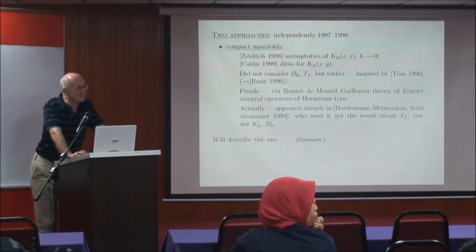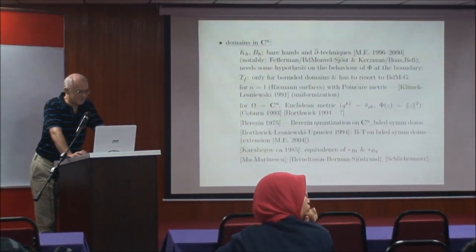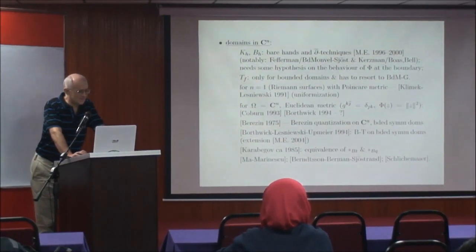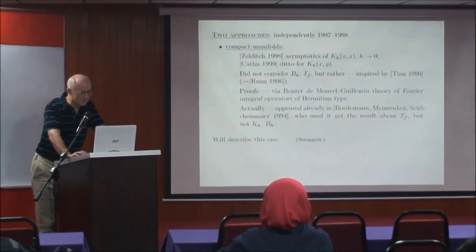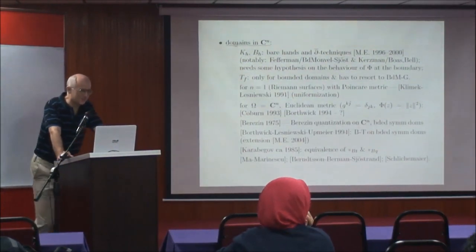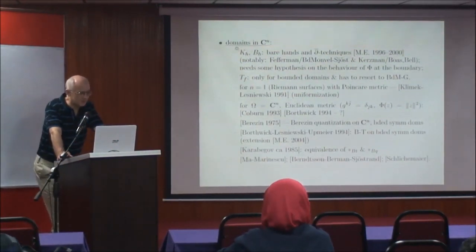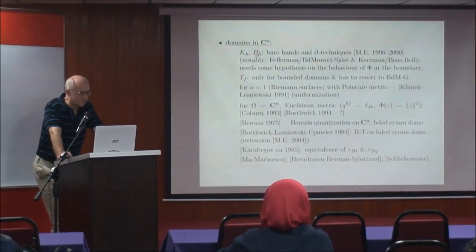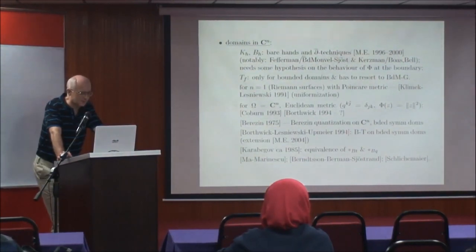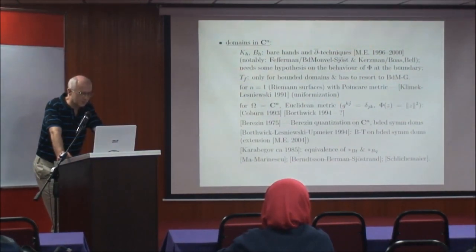They had the reproducing kernels but not the Berezin transform operators. The proofs that Cathelineau especially, but also Zelditch, gave used some machinery due to Boutet de Monvel and Guillemin on the theory of Fourier integral operators of Hermitian type — a very sophisticated machinery. All these authors were unaware that the same technique had already been used for precisely the same situation but applied directly to Toeplitz operators by Bordemann, Meinrenken, and Schlichenmaier in 1994, one of whom is sitting with us here. So, like Bordemann, Meinrenken, and Schlichenmaier in 1994.